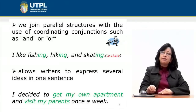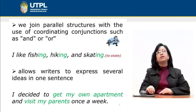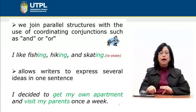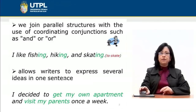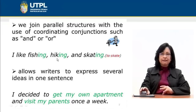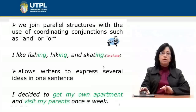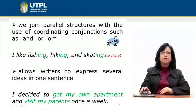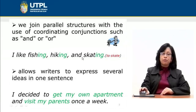We join parallel structures with the use of coordinating conjunctions such as 'or' and 'and.' For example, we have: 'I like fishing, hiking, and skating.' As you can see, we have the verbs fishing, hiking, and skating — all three presented using the -ing form. Here it is not possible to say 'I like fishing, hiking, and to skate' because we are using the gerund form, so we cannot change to the infinitive form at the end. That's why 'to skate' here would not be correct.